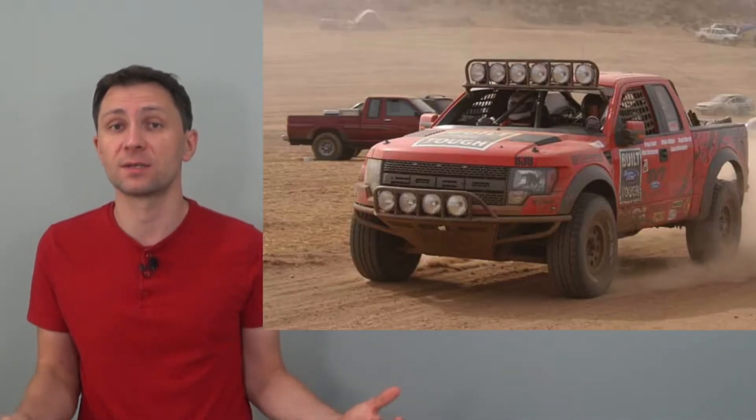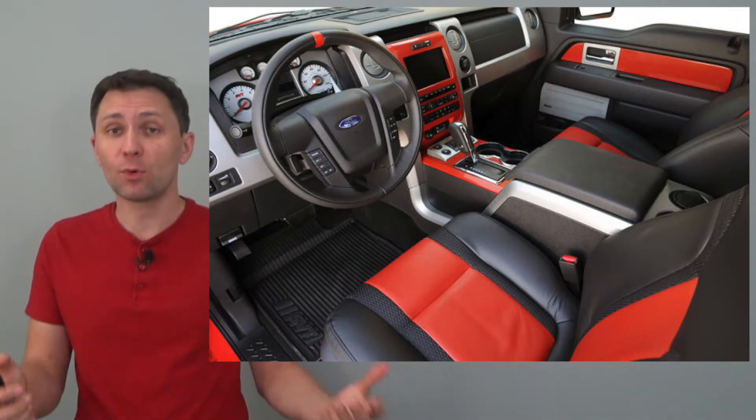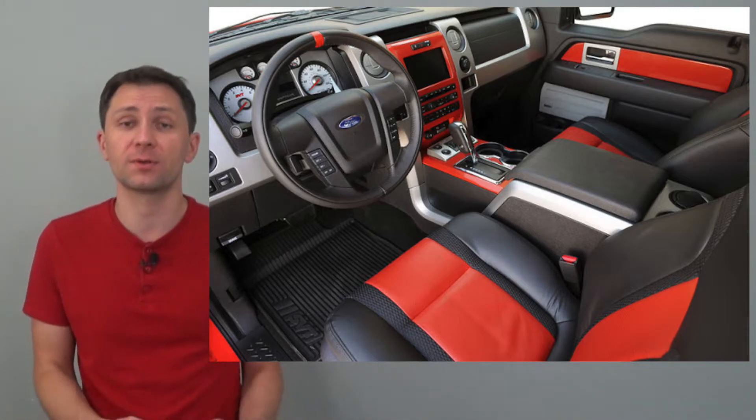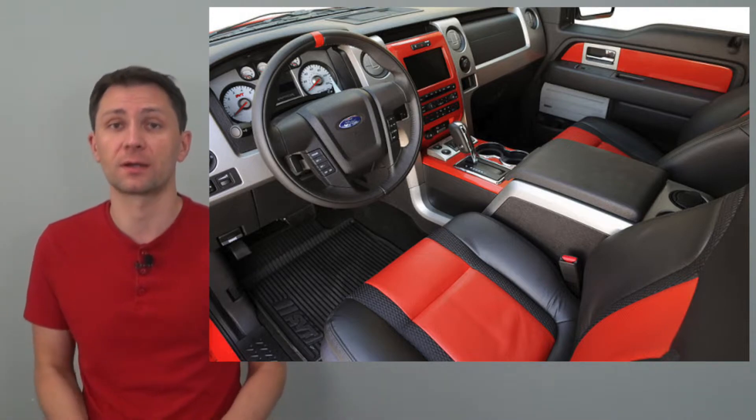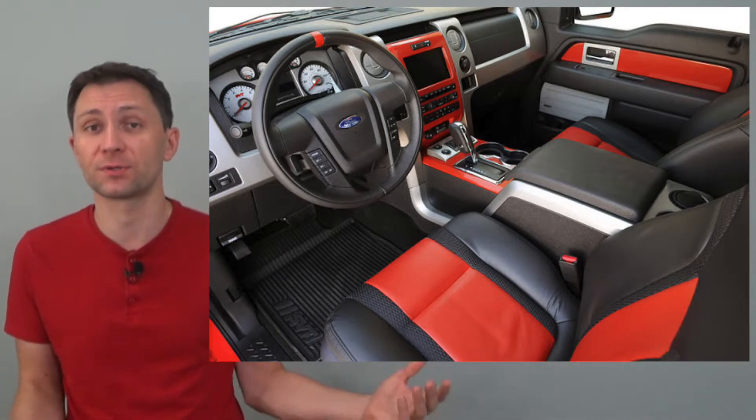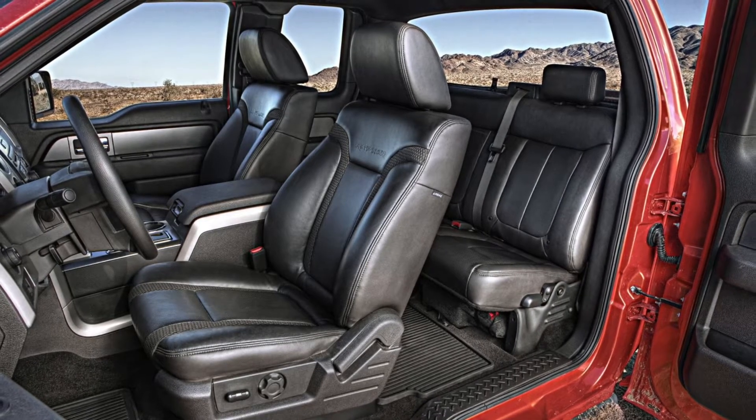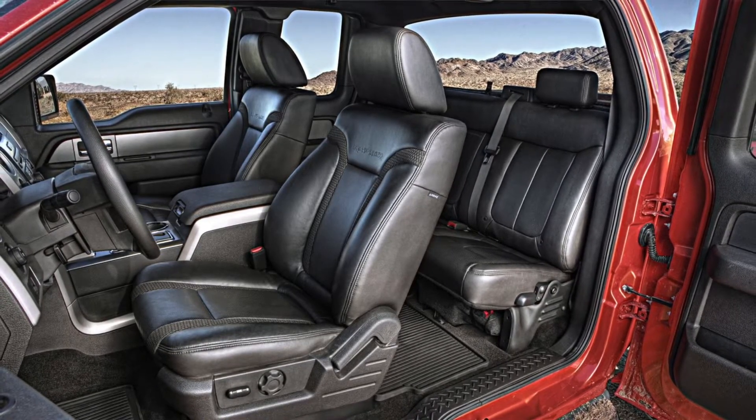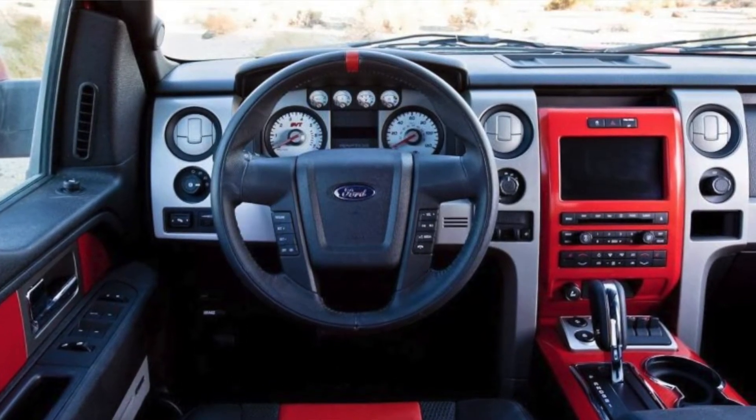And to maximize its departure angle, the truck received the shorter 5.5-foot bed. And mostly generously equipped, SVT Raptor is fitted with several interior features specific to the model line. Those are high bolstered seats and an orange stripe that was added to the leather-wrapped steering wheel, serving as a visual centering reference. The SVT Raptor was also pre-wired for aftermarket equipment.